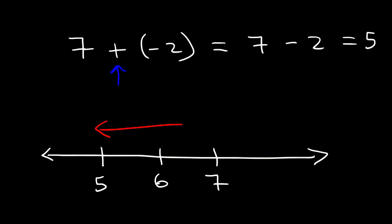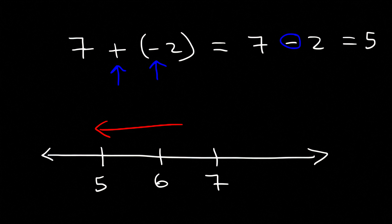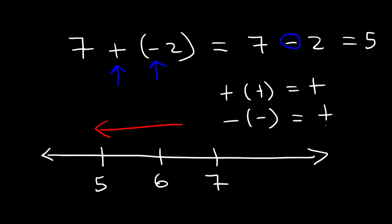A positive times a negative will give you a negative sign. If you multiply two positive signs, you get a positive number. If you multiply two negative numbers, you also get a positive number. But if you multiply a positive and a negative together, it will give you a negative number.